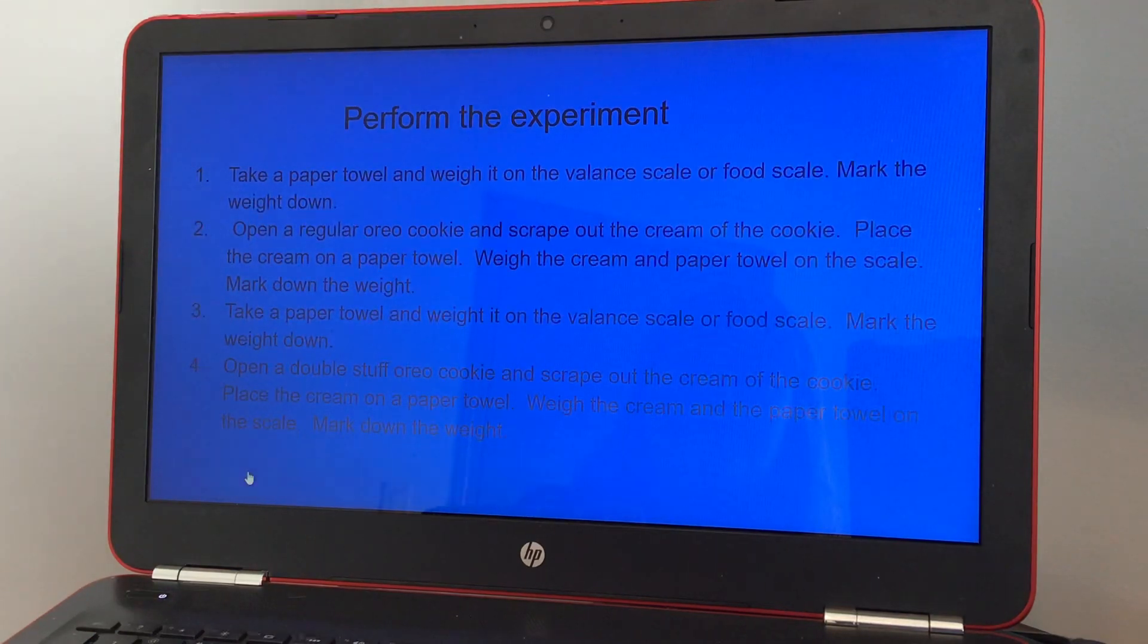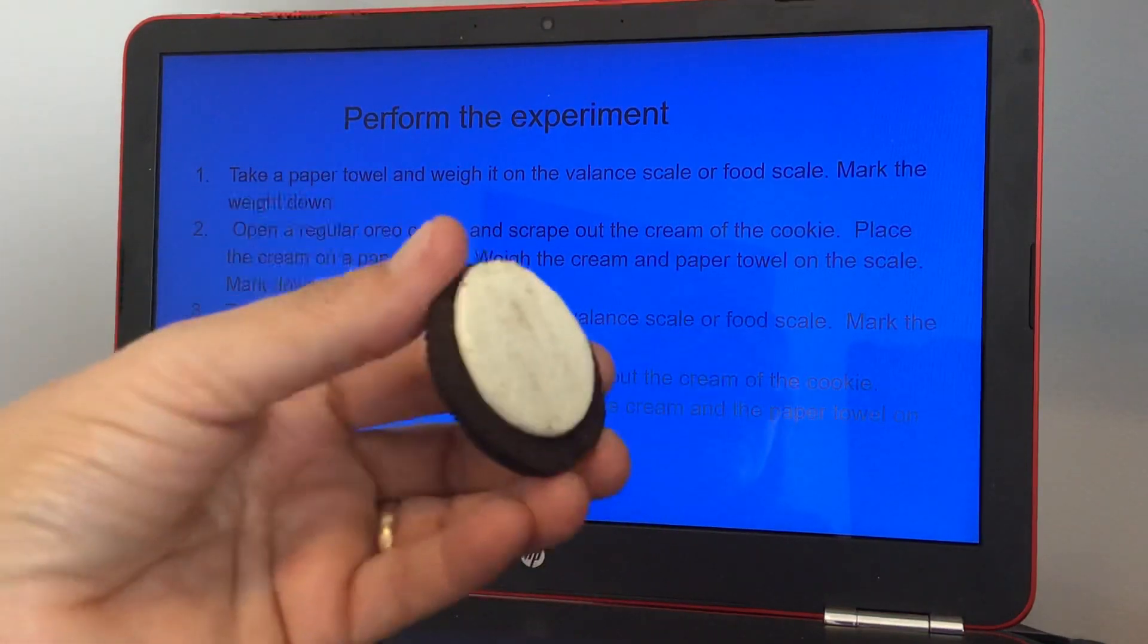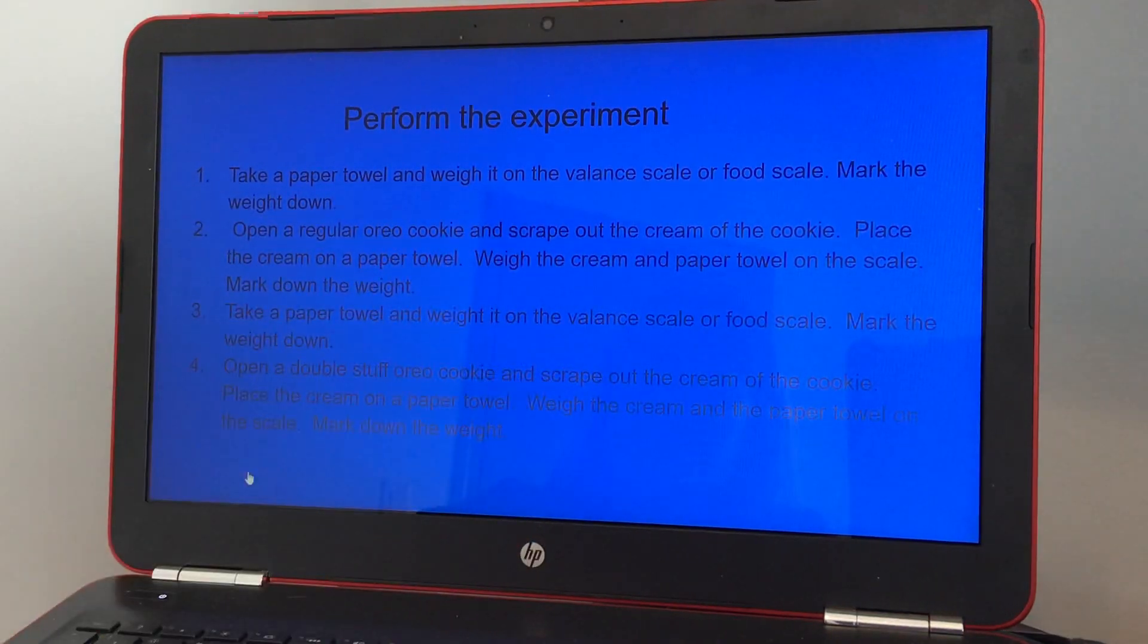Okay, so now we're going to perform the experiment. You're going to take a paper towel and weigh it on the scale and mark down the weight. Open a regular Oreo cookie. You're going to scrape out the middle of the cookie and place the cream on the paper towel. So make sure to open it and try and get as much of the white cream onto the paper towel as you can.